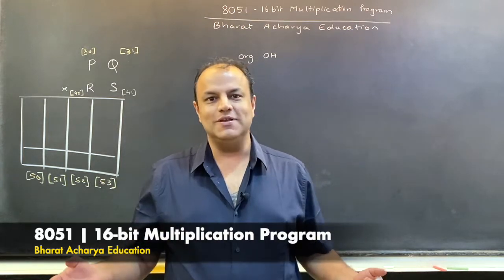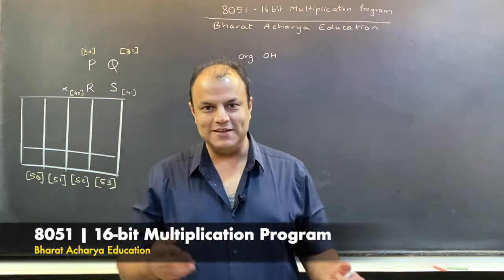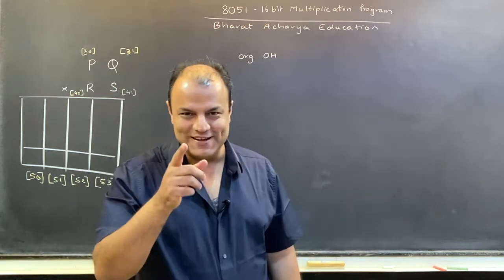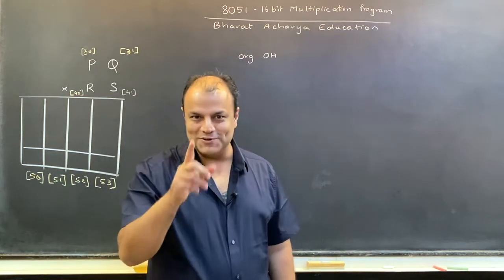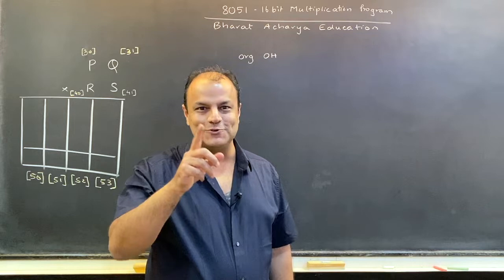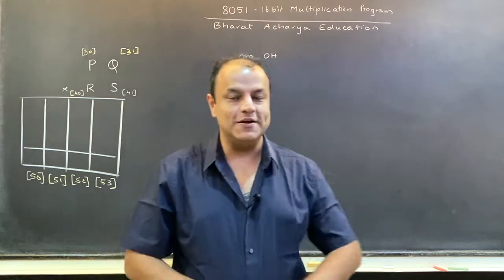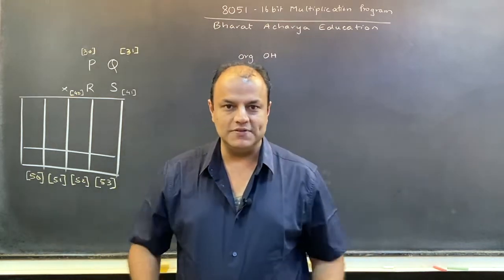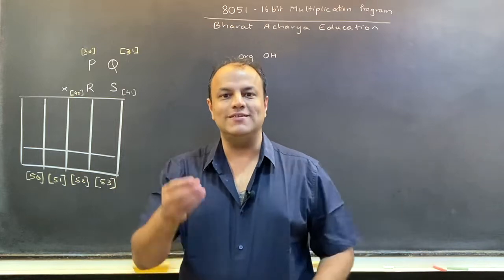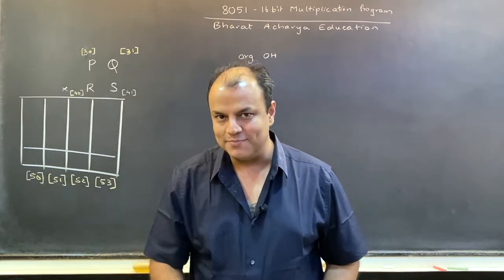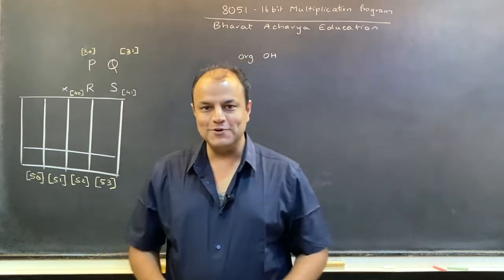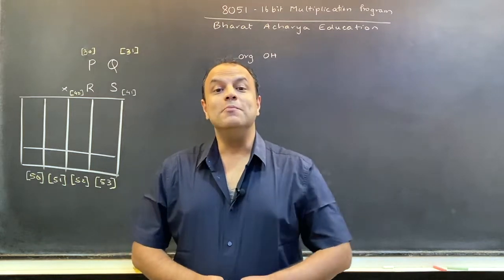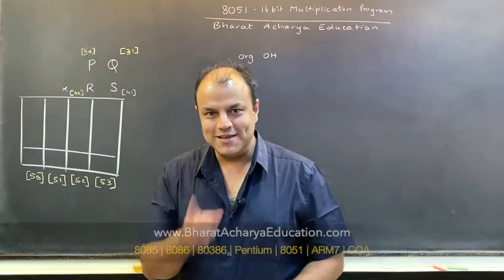8-bit multiplication is just too simple: take the first number in the A register, second number in the B register — no other way because multiplication happens only using A and B. Then you multiply, the answers are in A and B, store the result and go home. That's a five-line program; no one's really going to ask you that unless they want a very simple paper.